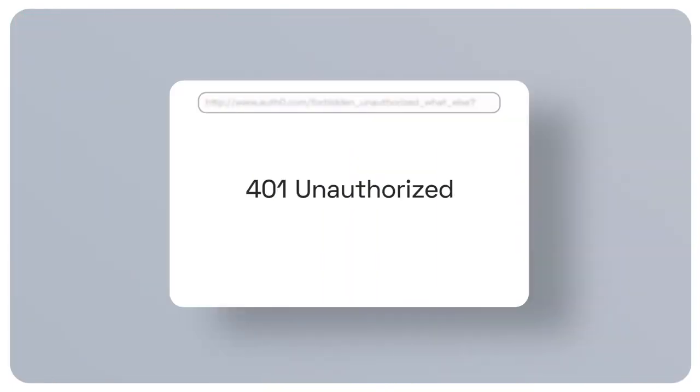Now that you know when to use each status code, let's talk about security. When you plan how to respond to your client's requests, you always have to keep security in mind. Since this additional information is optional for both the HTTP specifications and the OAuth 2 bearer token guidelines, you should think carefully about sharing it. Even though sharing this information can improve the collaboration between the API and the client, the same information may be used by malicious attackers to elaborate an attack strategy. For example, suppose your API returns a 401 unauthorized with a narrow description that the access token is expired — the API is giving out information about the token itself to a potential attacker.